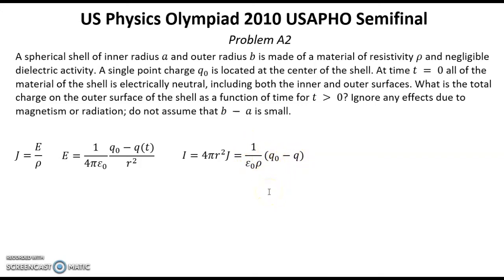The next step is to split variables Q and t. We have this equation: dQ over Q0 minus Q equal 1 over epsilon 0 ρ multiplied by dt. After integration we have this expression.